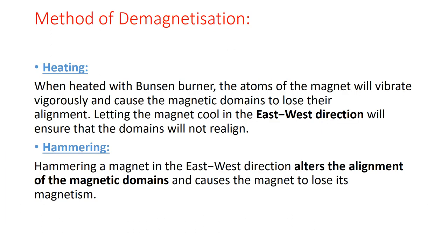To demagnetize a magnet, there are three methods. The first method is heating. You place your magnet in the east-west direction. When the magnetic domains heat up and vibrate, they lose their alignment. Once the magnetic domains lose their alignment, the magnet loses its magnetism and becomes demagnetized. The second method is hammering — you place your permanent magnet in the east-west direction and hammer it, which also disturbs the alignment of the magnetic domains.